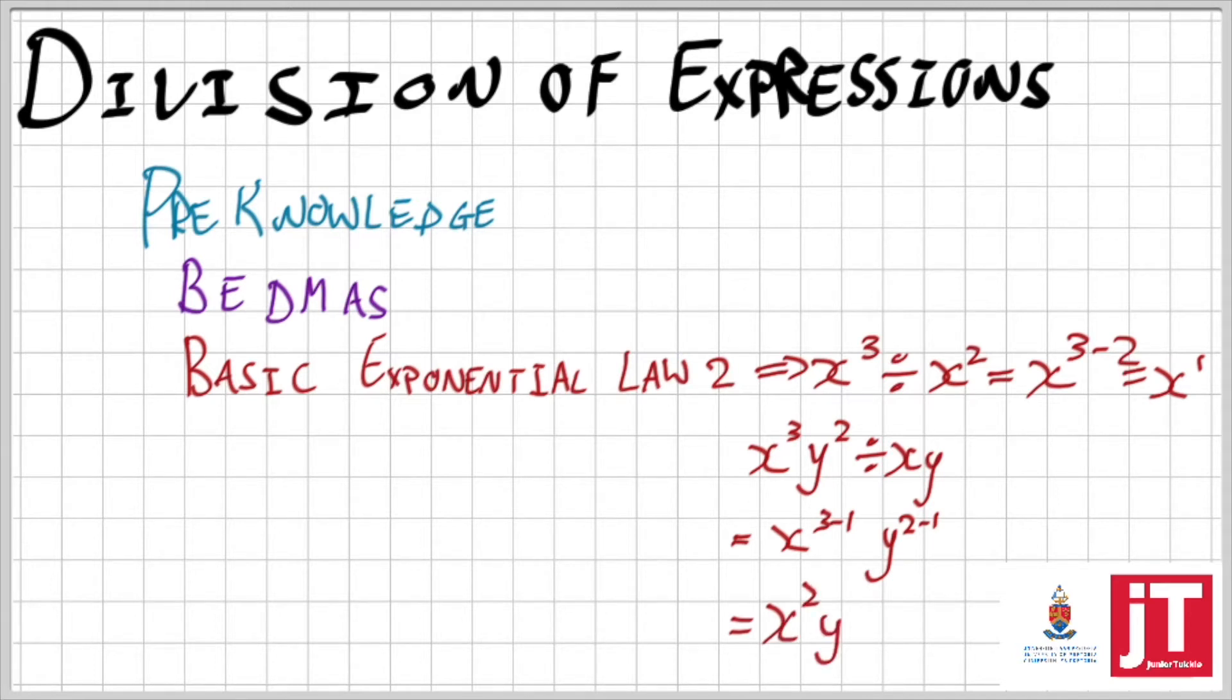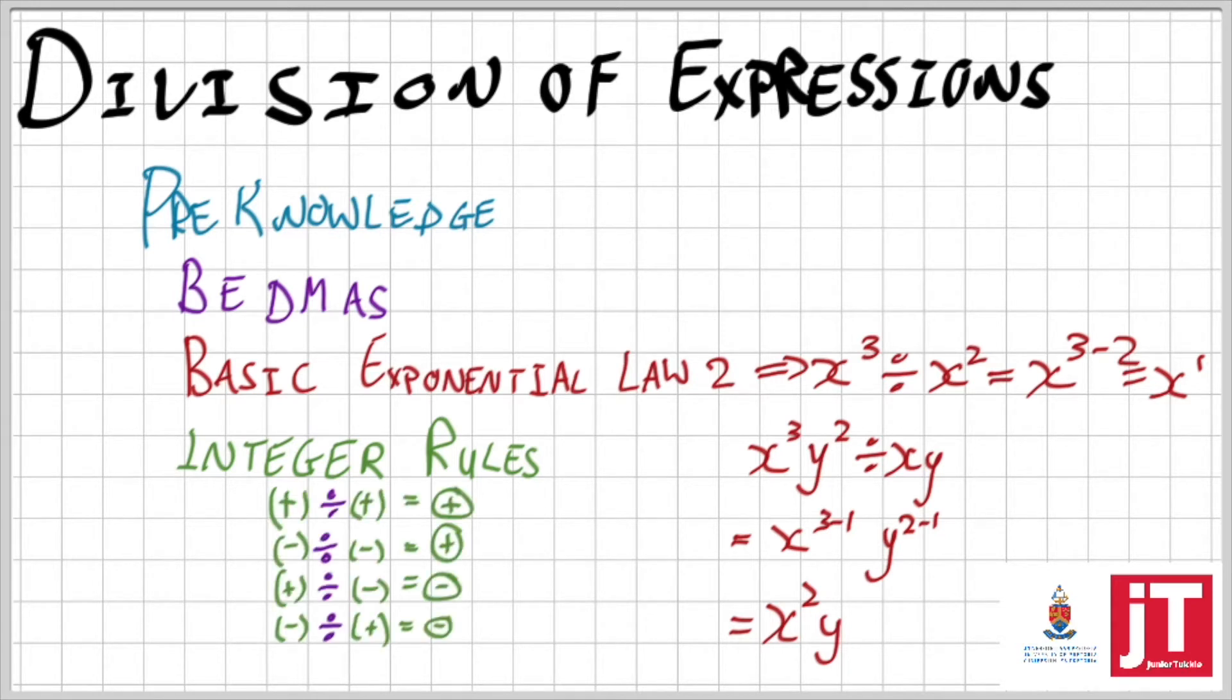Of course you need the integer rules. With division, if I divide a positive by positive it gives me a positive. A minus divided by minus is a positive. Positive divided by negative or negative divided by positive gives me a negative. This pre-knowledge you need to make sure you've got.